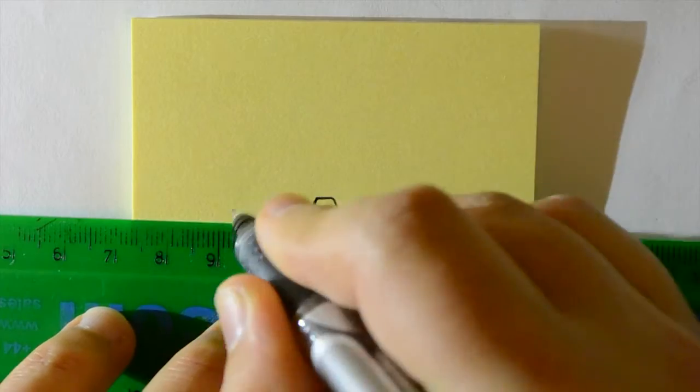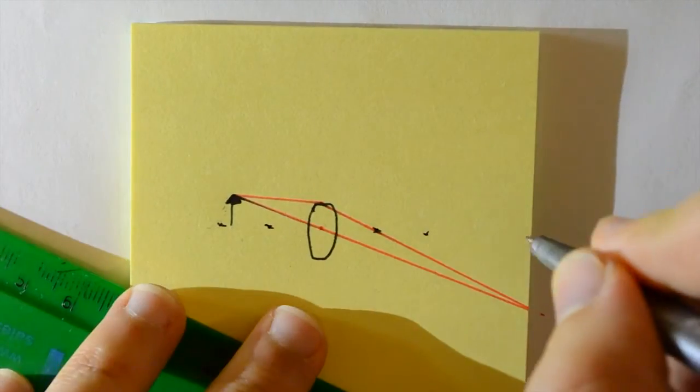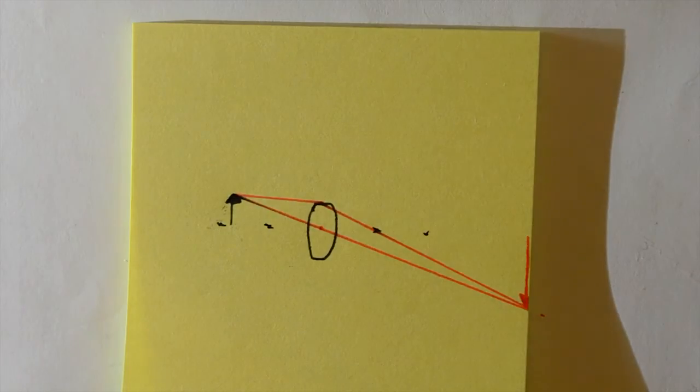Now when the object is between one and two focal distances away, we find that something strange happens. The image is still magnified, but now it is inverted.